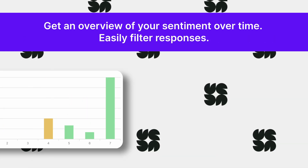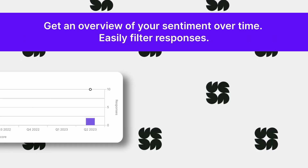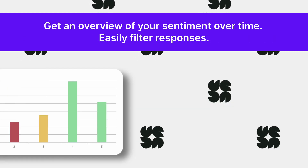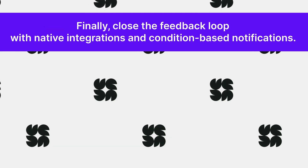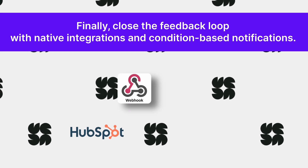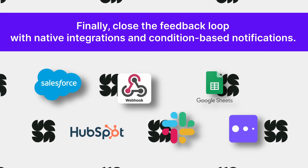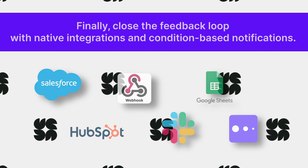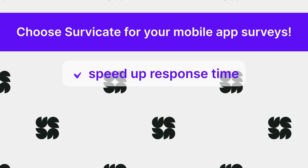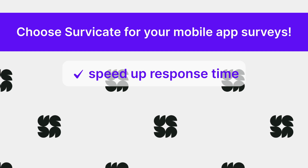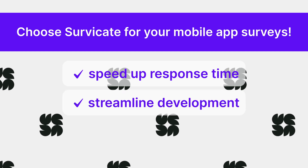Get an overview of your sentiment over time. Easily filter responses. Close the feedback loop with native integrations and condition-based notifications. Act on responses faster, prioritize your roadmap and improve app performance.